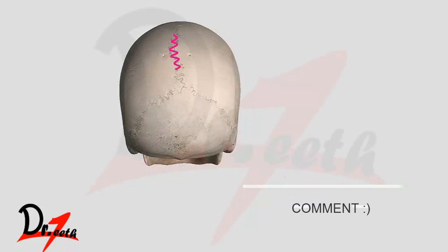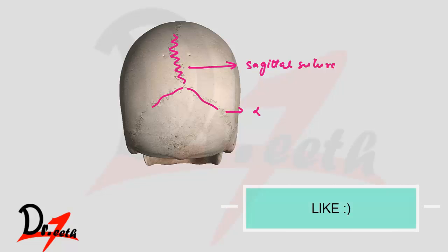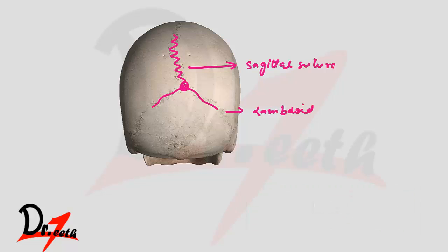If we clear all these things, we will see a suture between the parietal bones — this is called the sagittal suture. And this suture between the parietal and occipital bone is called the lambdoid suture. They intersect at a point in between called the lambda, which you can remember from the word lambdoid suture.